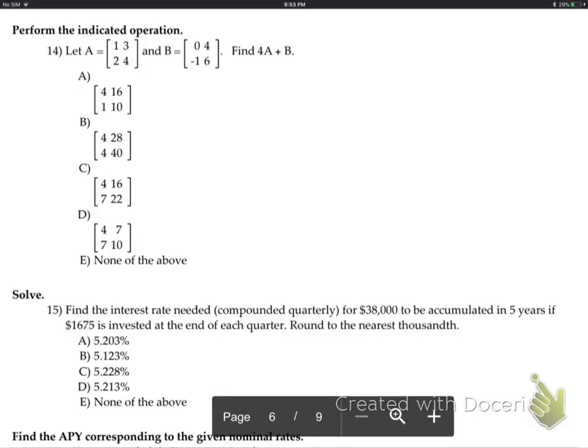So number 14, this is just going to be put A and B into your graphing calculators. Do 4A plus B and get the answer for number 14. When you do all that and type all that in, you'll get answer C. It's this one. Let's go on to 15.